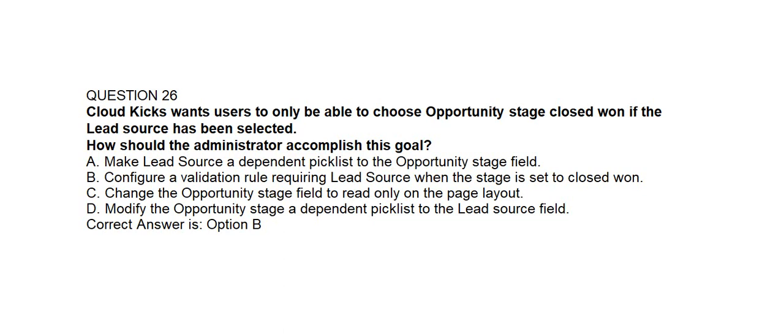Option D: modify the opportunity stage as a dependent picklist to the lead source field. Correct answer is option B: configure a validation rule requiring lead source when the stage is set to closed won.